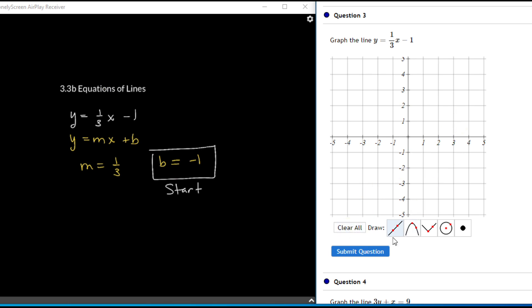You only want to graph with the line. Make sure you hit the line function first when you're doing this. We say b equals negative 1, that's our y-intercept, where it crosses the y-axis.